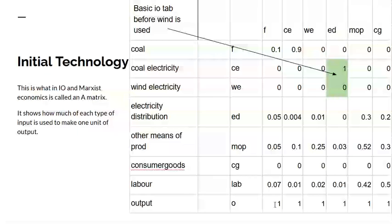To produce one unit of output of coal, it uses 0.07 units of labour, 0.05 units of means of production, 0.05 units of electrical power, and some coal itself is used in coal production — assuming they've got some steam engines to pump the coal. At the moment I've set up electricity distribution to solely use coal electricity. So to produce one unit of distributed electricity we use one unit of coal-produced electricity, or we could use one unit of wind-produced electricity, or any combination of the two.